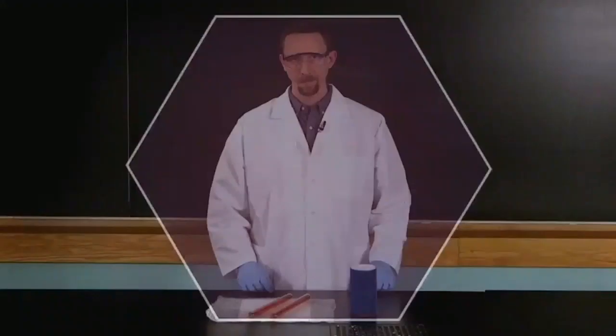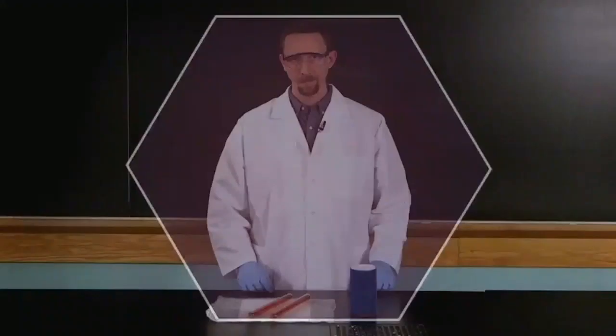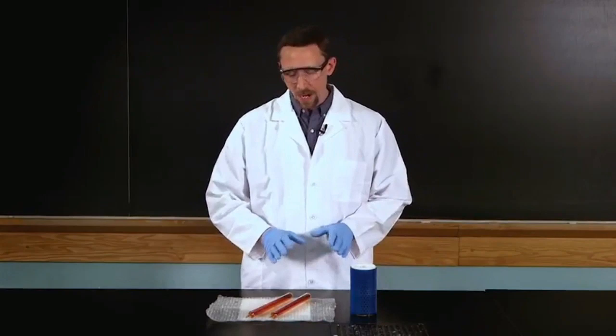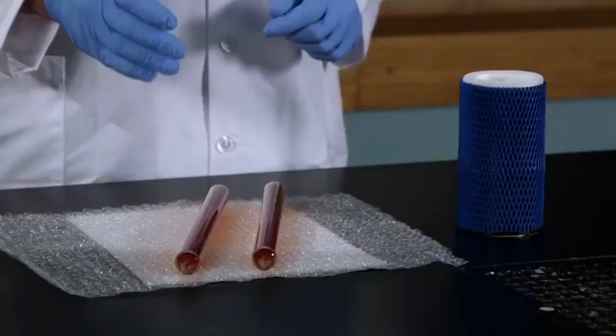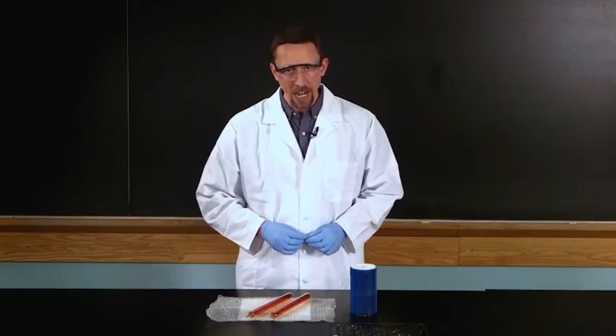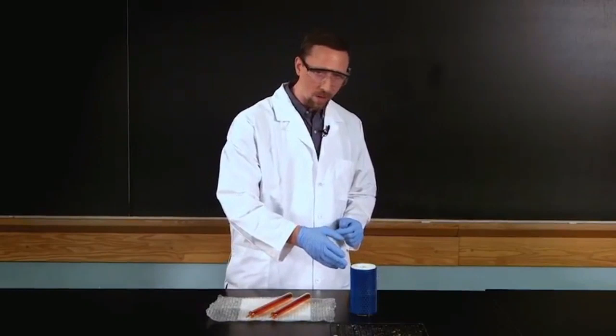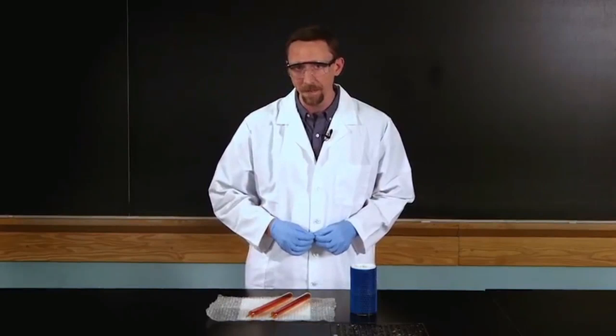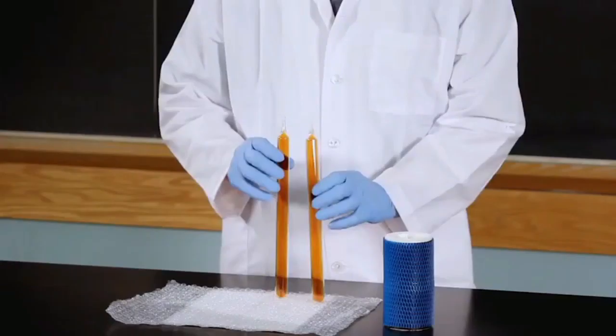We're back in Osmond Lab at Penn State University again. This time, to see if we can observe Le Chatelier's principle working on the NO2-N2O4 equilibrium, just as we had predicted. To do this, I'm going to use some sealed glass tubes filled with NO2, nitrogen dioxide gas. And to change the temperature pretty dramatically, I'm going to use a Dewar filled with liquid nitrogen, which has a temperature of minus 197 degrees centigrade.